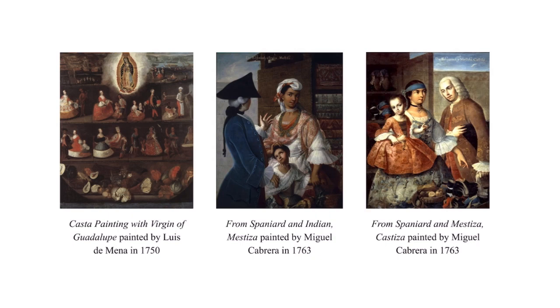To understand this genre of art, we'll be viewing the following three paintings: Casta painting with the Virgin of Guadalupe, painted by Luis de Mena; from Spaniard and Indian, Mestiza; and from Spaniard and Mestiza, Castiza, both painted by Miguel Cabrera. The first painting we'll be viewing today is Casta painting with the Virgin of Guadalupe, painted by Luis de Mena in 1750.